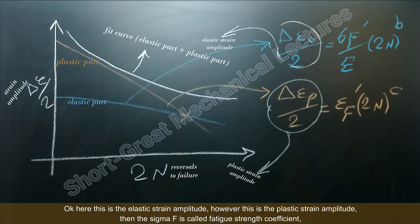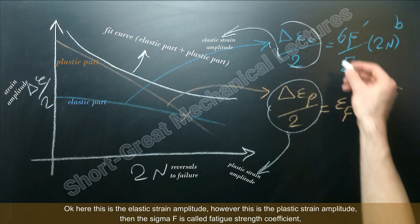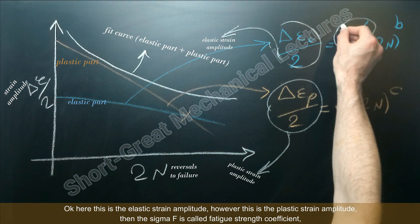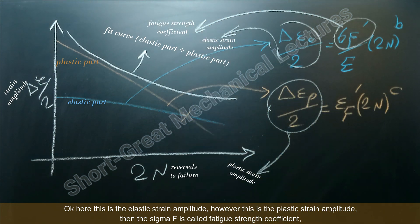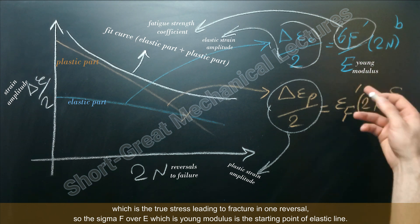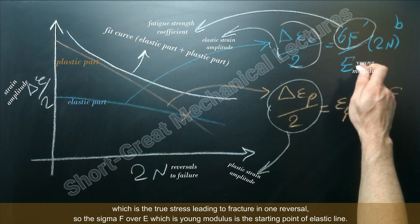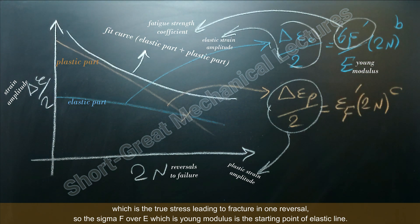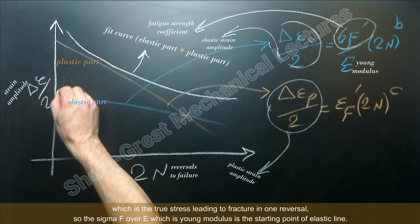Then the sigma F here is called fatigue strength coefficient, which is the true stress leading to fracture in one reversal. So the sigma F over E, which is Young's modulus, I mean E is the Young's modulus, is the starting point of the elastic line.